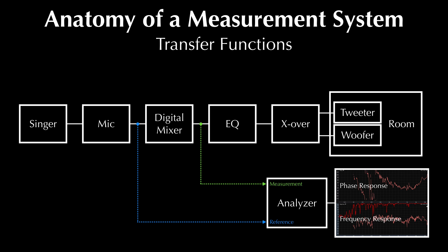With a dual-channel system, we can take our measurement signal from the mixer output and our reference signal from the mixer input. When the analyzer performs a transfer function, it tells us information about how the signal changes as it passes between our two probes. Everything between the probes can be called the system under test, and this concept is sometimes called source-independent measurement. I'll explain this in further detail in a later video focusing specifically on transfer functions.